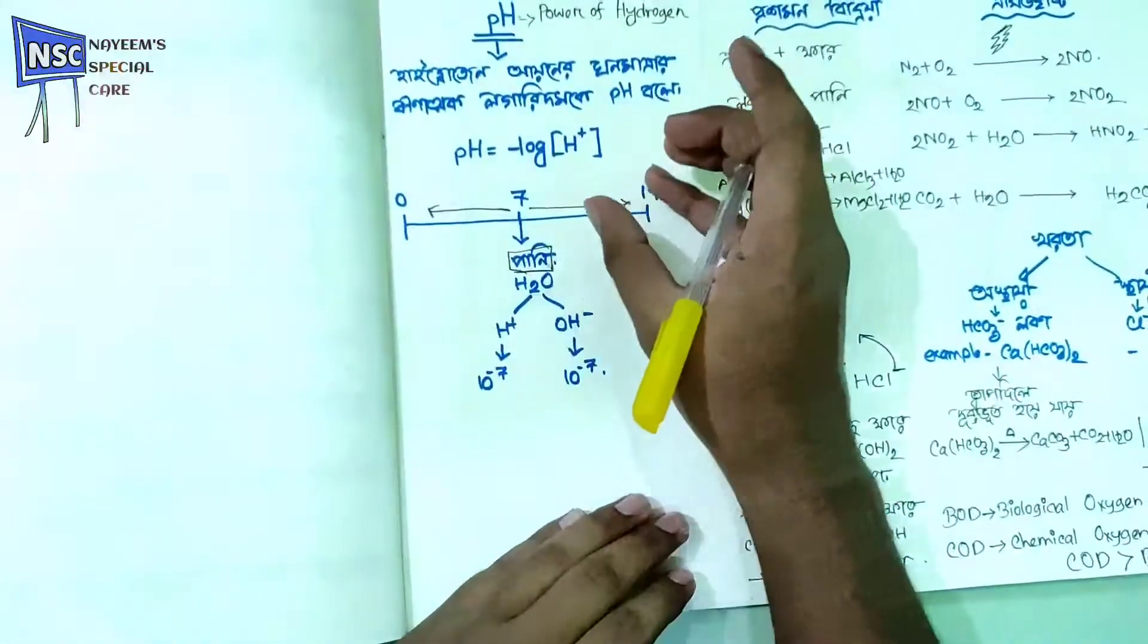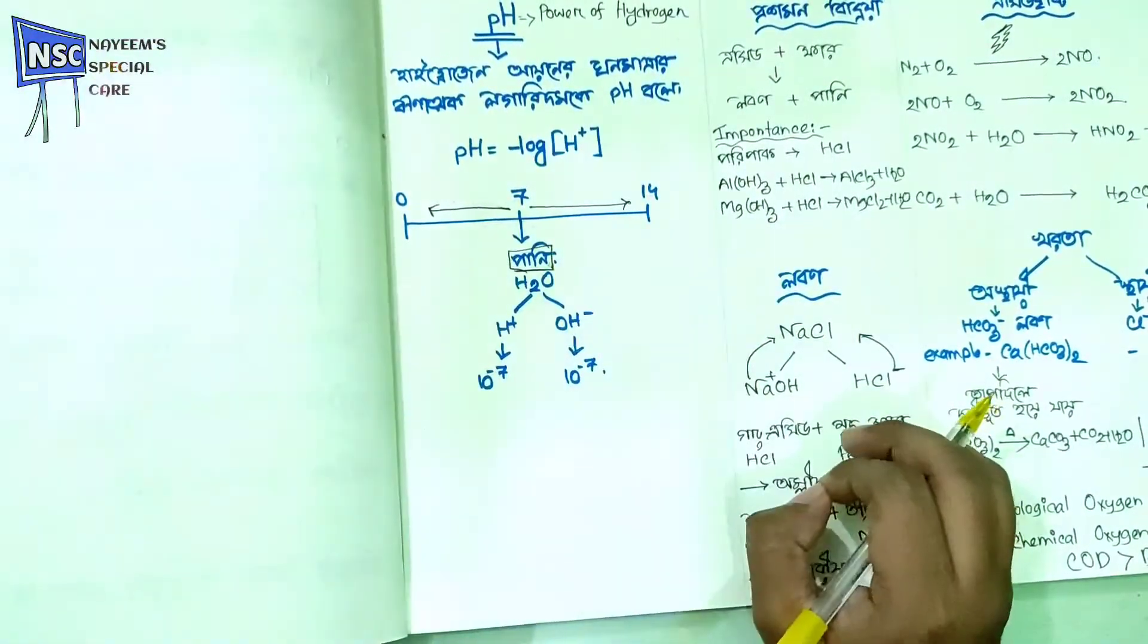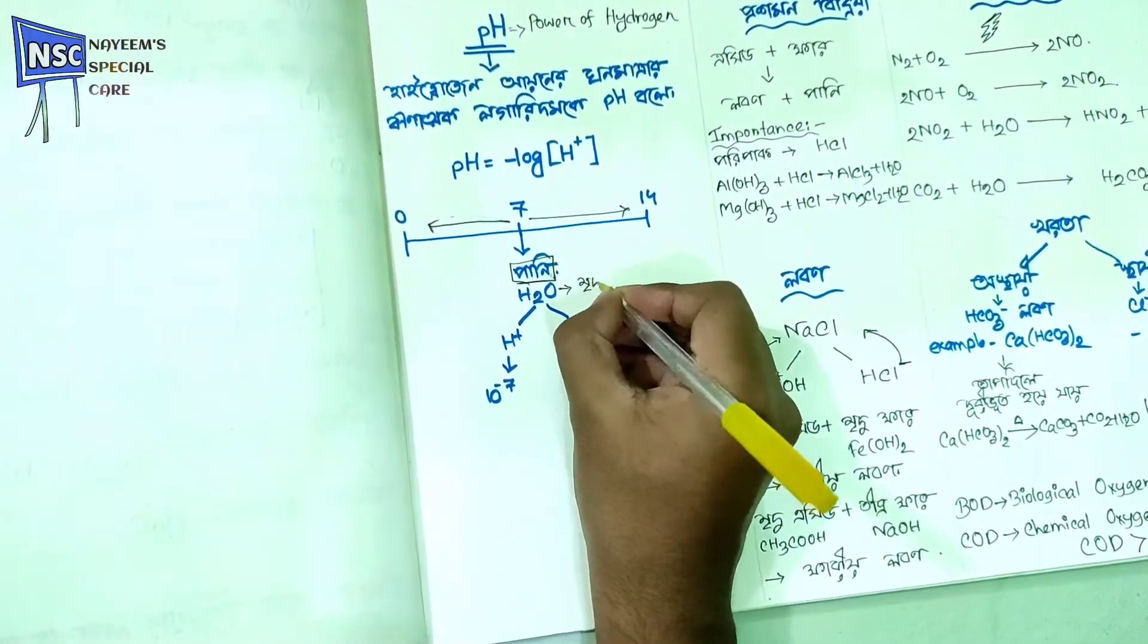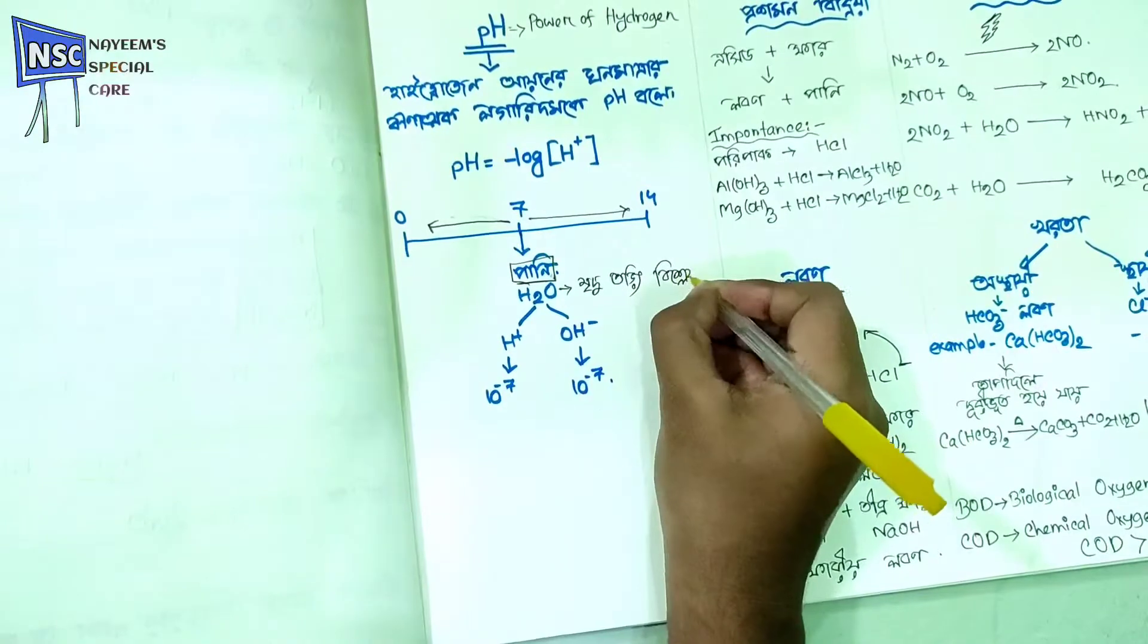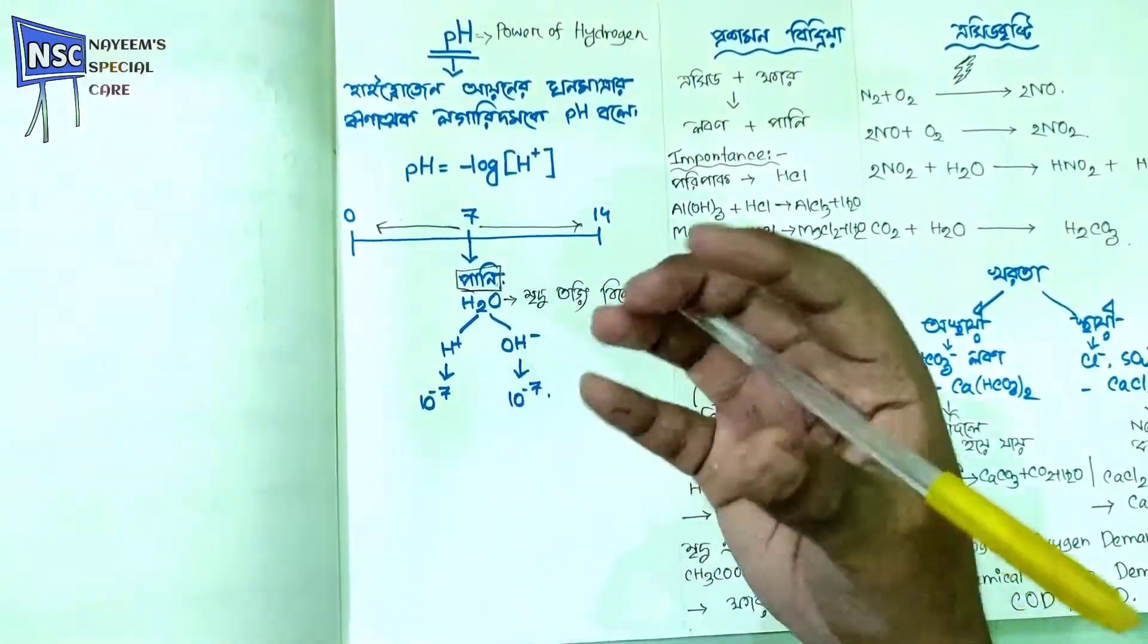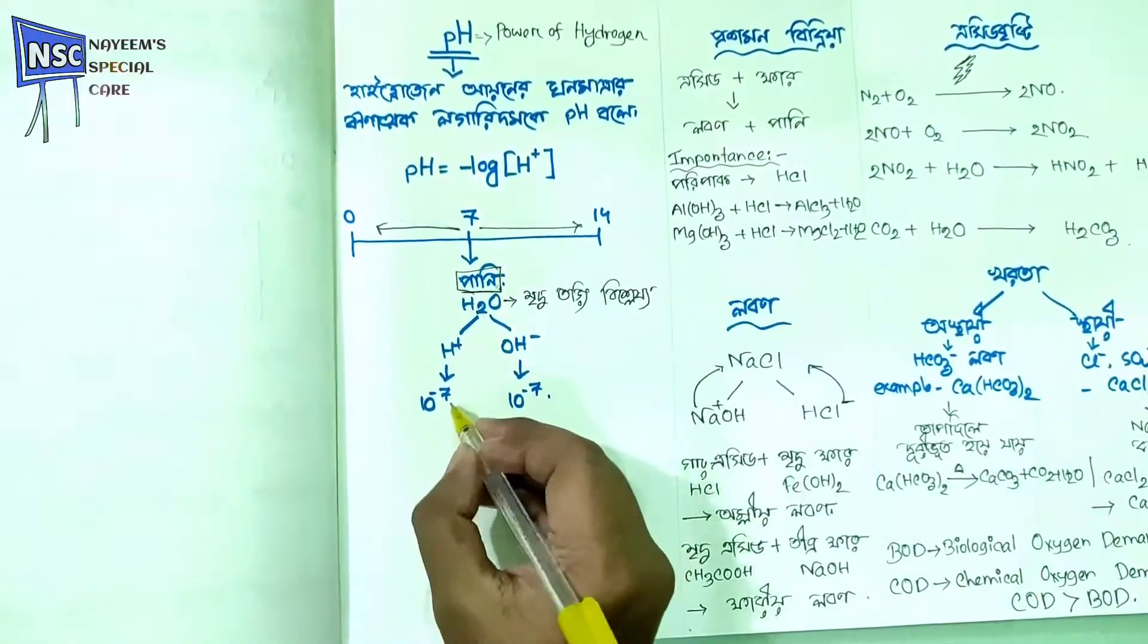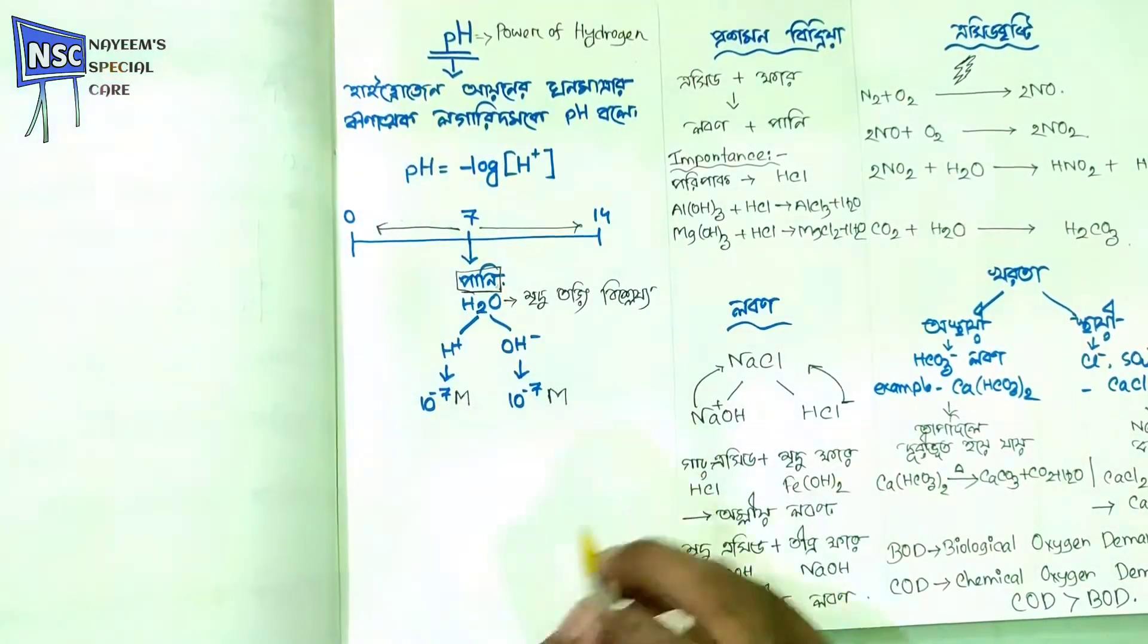If you have water, the water has a very low concentration. The water dissociates and we will find that 10 to the power minus 7 mol H plus and 10 to the power minus 7 mol OH minus.